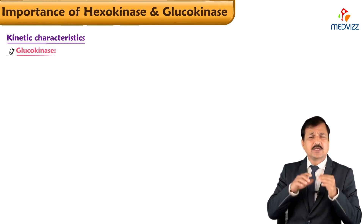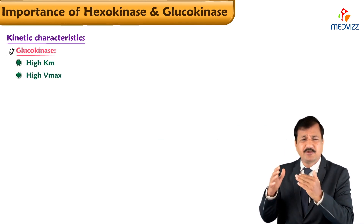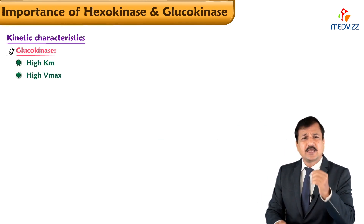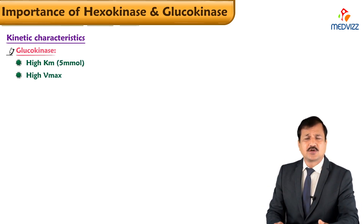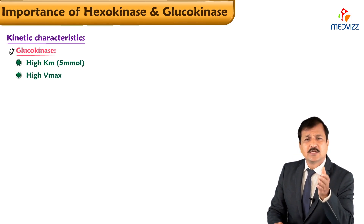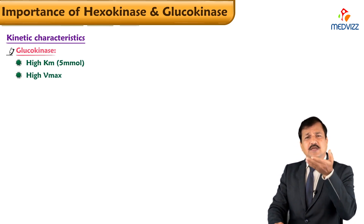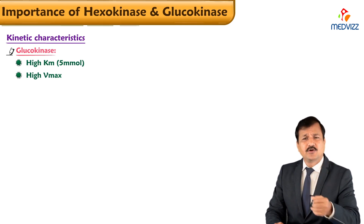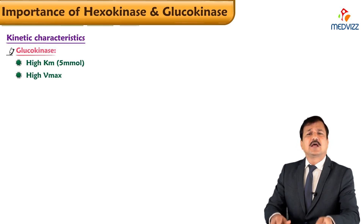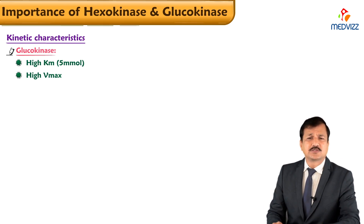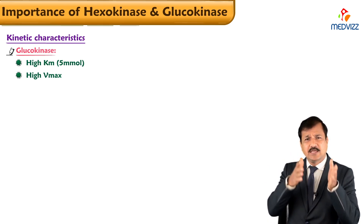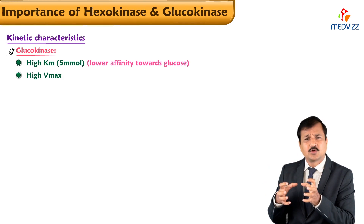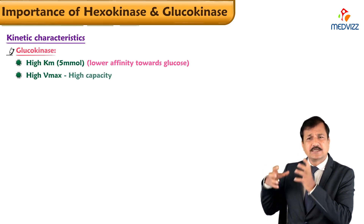Coming to glucokinase: glucokinase is a high KM and high Vmax enzyme. The KM of glucokinase is 5 millimoles — a higher glucose concentration. At 5 millimoles, glucokinase converts glucose into glucose-6-phosphate, trapping that glucose inside the cell. It is also a high Vmax enzyme, meaning it has lower affinity for glucose but high capacity.